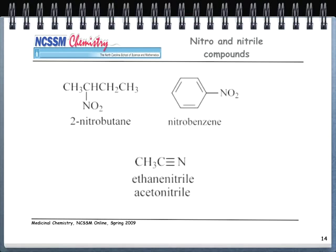You also have nitro and nitrile compounds, which appear frequently in medicinal chemistry. The nitro group is an NO2 group — for example, a four-carbon butane with a nitro group on carbon two is 2-nitrobutane. A benzene ring with a nitro group attached is nitrobenzene. A nitrile is a C triple-bonded N compound — for example, two carbons (ethane) with nitrile added gives ethanenitrile, commonly known as acetonitrile.